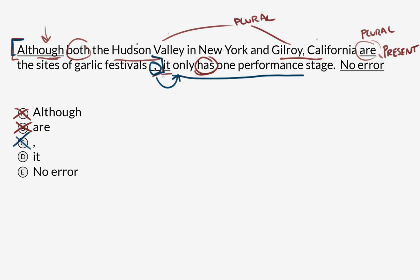This leaves us to consider 'it' or 'no error.' Let me clean this up a little bit. What are we looking at when we're looking at 'it'? It is a pronoun—a singular pronoun.